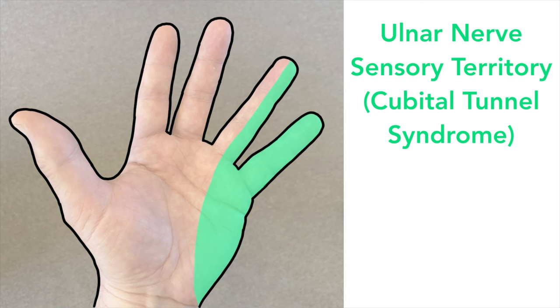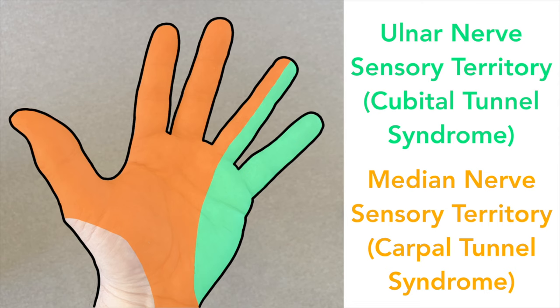We call this area the ulnar nerve sensory territory. The other common compression neuropathy affecting the other fingers is carpal tunnel syndrome, which involves a different nerve called the median nerve. So if your symptoms are in the median nerve territory then you're more likely to have carpal tunnel syndrome rather than cubital tunnel syndrome — I've done another video about that which I'll link to here. Like most musculoskeletal conditions, the symptoms of cubital tunnel syndrome can vary in intensity from mild up to severe. Mild symptoms are usually just an intermittent tingling sensation in the ulnar nerve territory, and people tend to feel it mainly in the little finger.